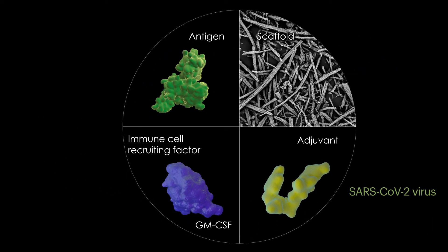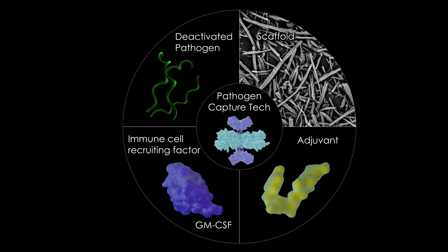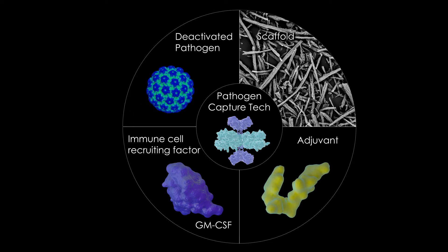These researchers are also pursuing similar vaccine approaches against other viruses, such as influenza virus and HIV. As proof of concept, the Wyss researchers have successfully formulated Omnivax vaccines that can protect animals, including mice and pigs, against a lethal infection of pathogenic E. coli.